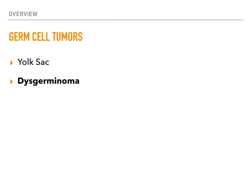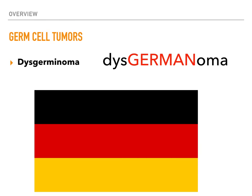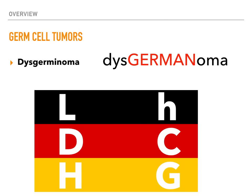Moving on, we're going to talk about a dysgerminoma. Think 'dysgerminoma' — like Germany — because everything you need to know has to do with the German flag. There are three colors in the German flag, and there are three-letter acronyms to know: in a dysgerminoma, you have increased levels of LDH and HCG. That is literally the only finding you need to remember. If they give you increased levels of either of these in the setting of an ovarian tumor presentation, it's going to be a dysgerminoma.